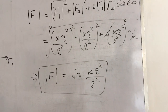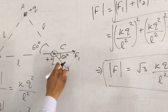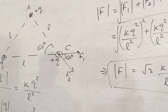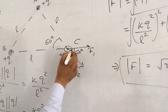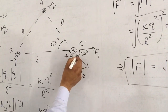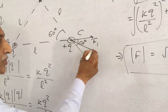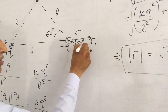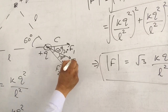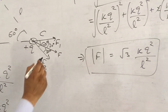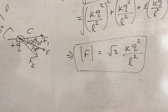Now I can find the direction of the resultant. Since the two forces F1 and F2 are of equal magnitude, the resultant must be along the bisector of the angle between them. The bisector bisects the 60-degree angle, giving 30 degrees on each side. This is the direction of the resultant force, whose magnitude is root 3 KQ squared upon L squared.